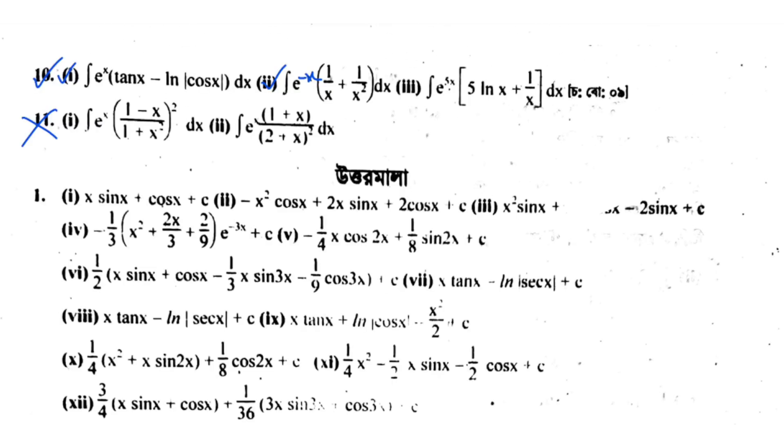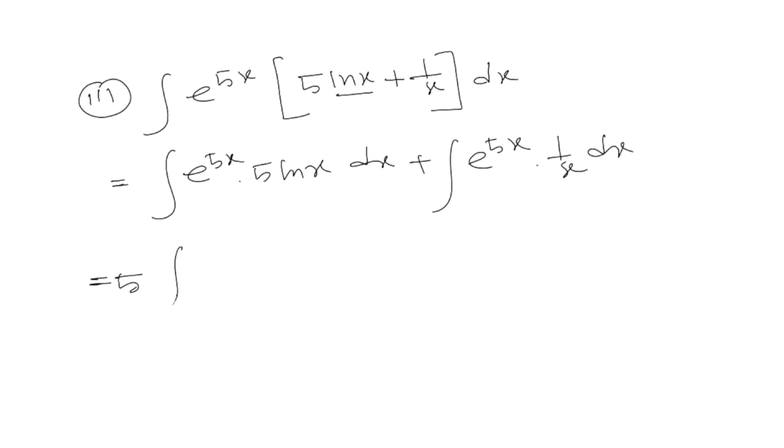Problem number three: the integral of e^(5x) times (5ln(x) + 1/x) dx. We can separate this as e^(5x) times 5ln(x) plus e^(5x) times 1/x. Taking the 5 outside, we have 5 times the integral of e^(5x) times ln(x) dx plus the integral of e^(5x) times 1/x dx.